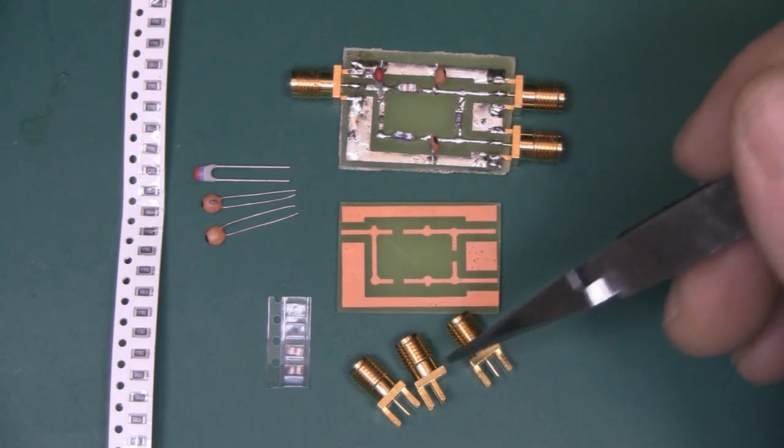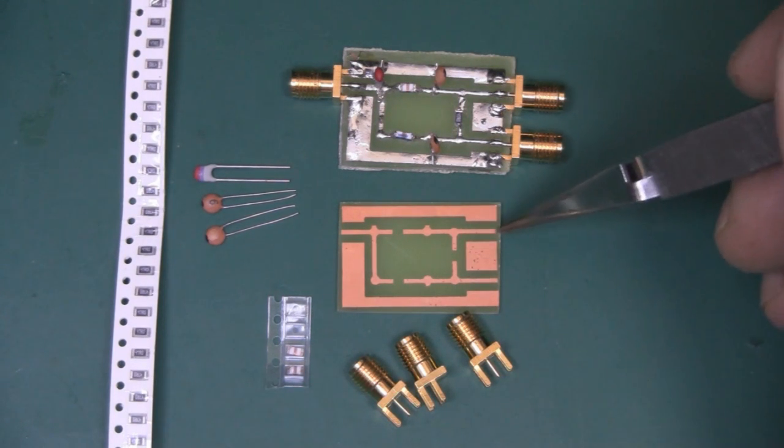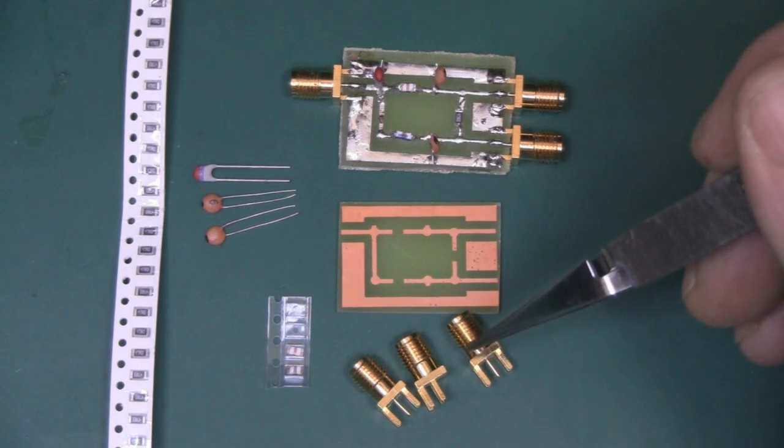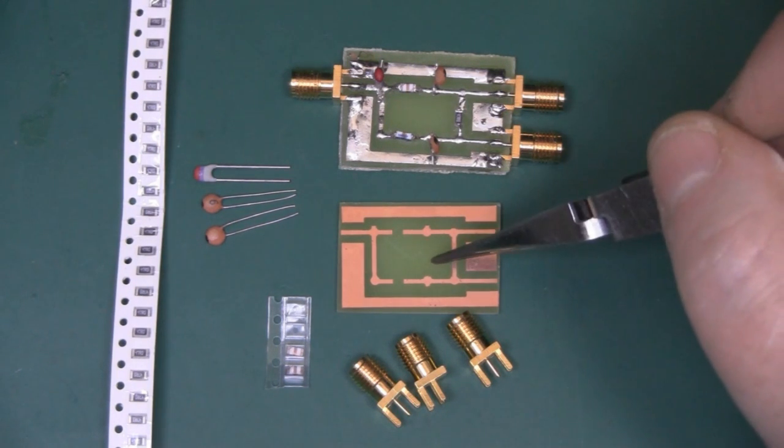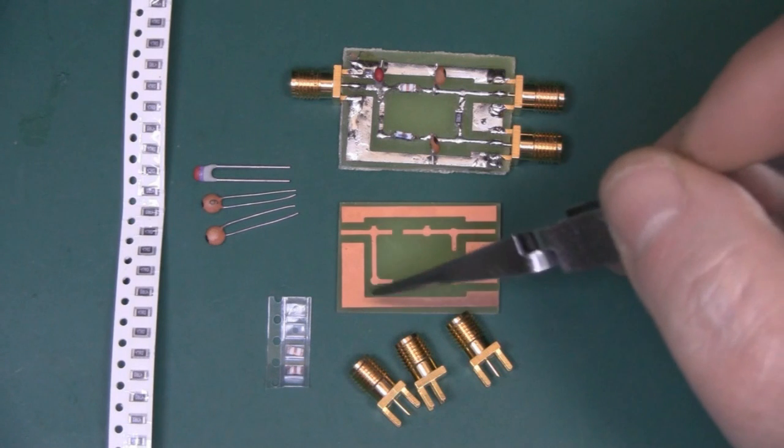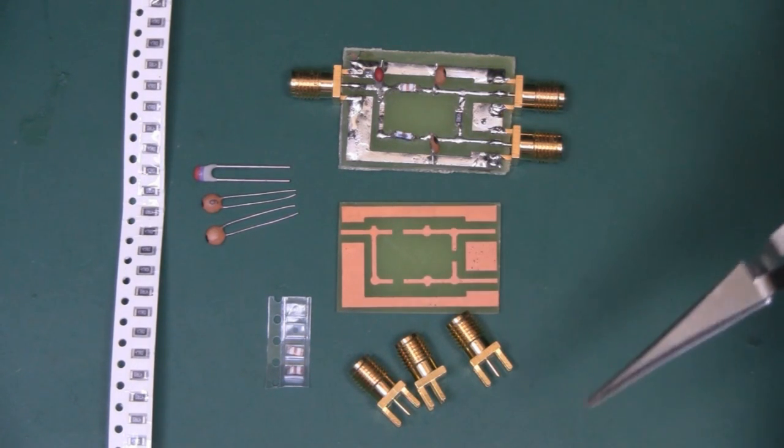Here I've got three SMA connectors, the type that actually fit PCB boards. They slip in between the board itself but this is optional. You could actually just solder your coax directly to the PCB board. So first thing I'm going to do with the PCB board is flow solder on all the copper tracks here to prepare it to actually solder all the components in place.